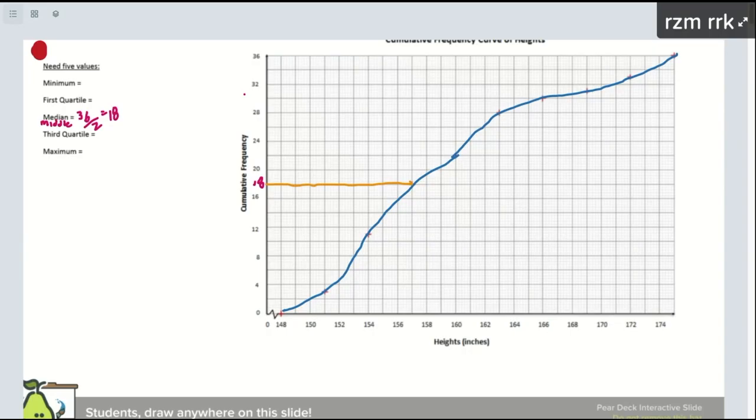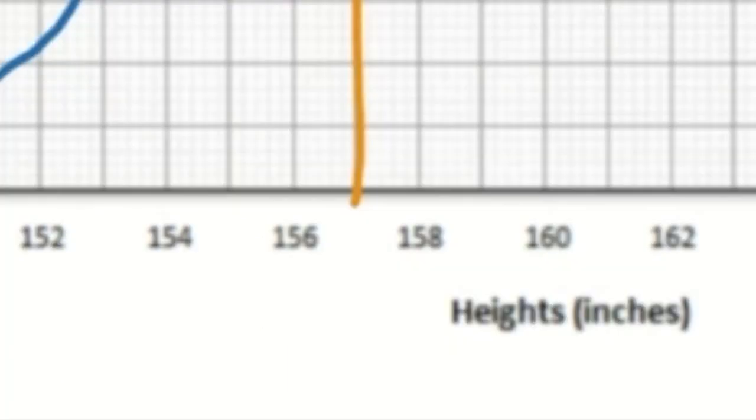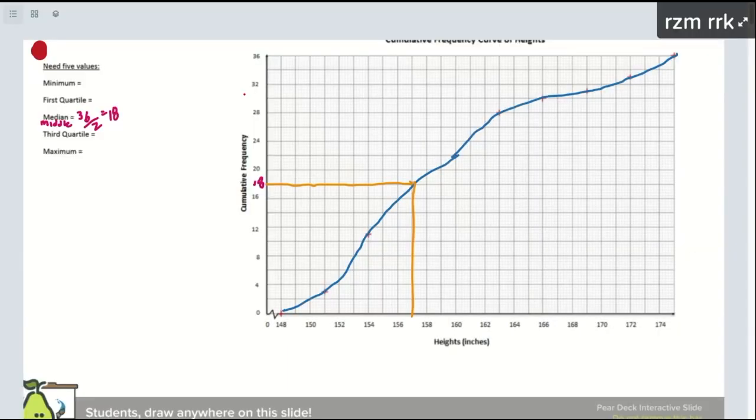Now I go down. This will represent my median height. So the median height would be between 156 and 158. 157. That's my median height. So our median height is 157. That's our answer. That's how I find the median.